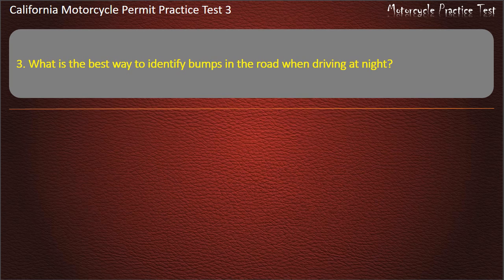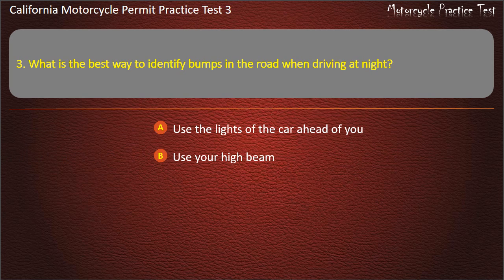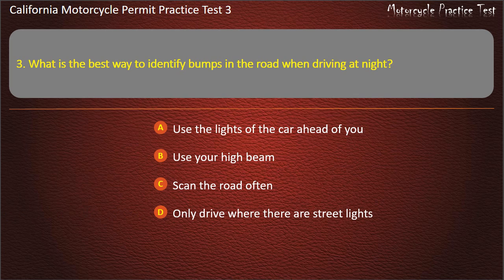Question 3. What is the best way to identify bumps in the road when driving at night? Use the lights of the car ahead of you, use your high beam, scan the road often, or only drive where there are street lights. Answer: Use the lights of the car ahead of you.